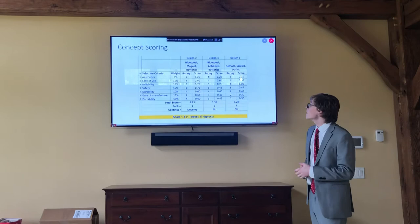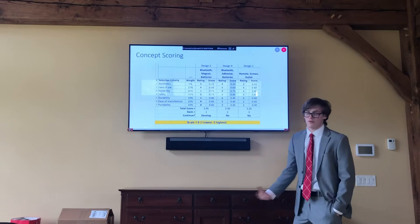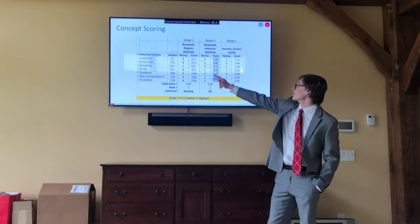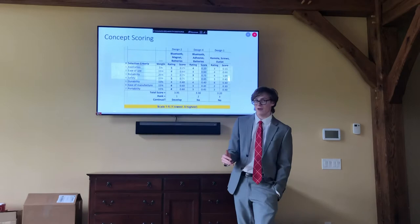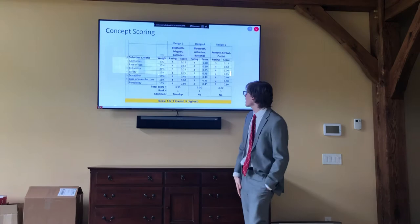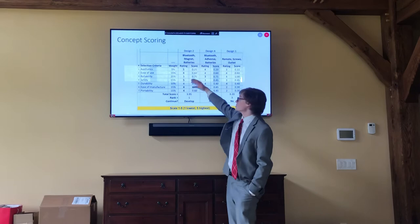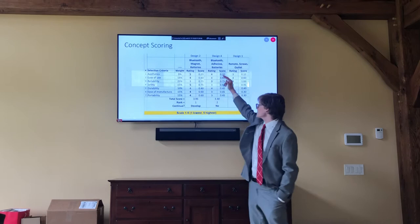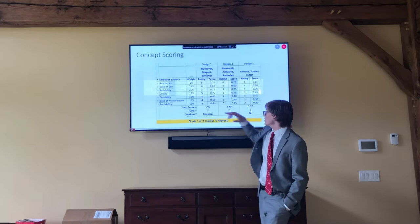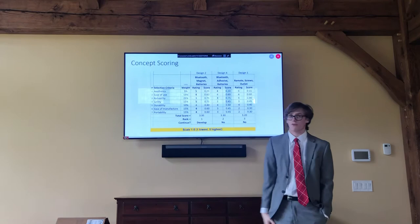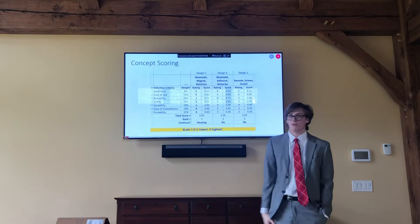We went into concept scoring and picked three designs for serious consideration. Design two was Bluetooth, magnet, and batteries. Design four was Bluetooth, adhesive, and batteries. Design one was a remote, screws, and outlet connection. The scoring method uses a rating of one through five — five being highest — multiplied by a weight, giving a total score for each concept. We got 3.95 for design two, 3.30 for design four, and 3.20 for design one. We ended up going with design two since it scored the highest, and that's the concept we decided to develop further.